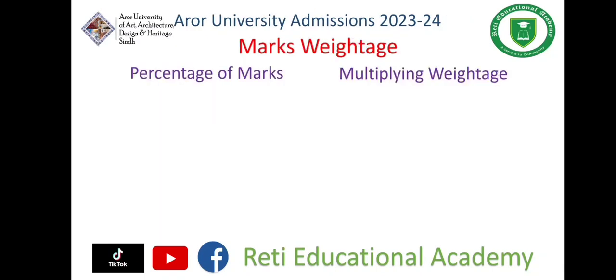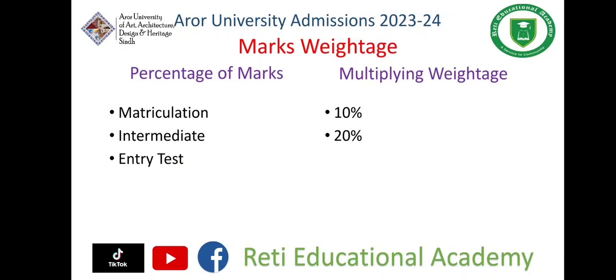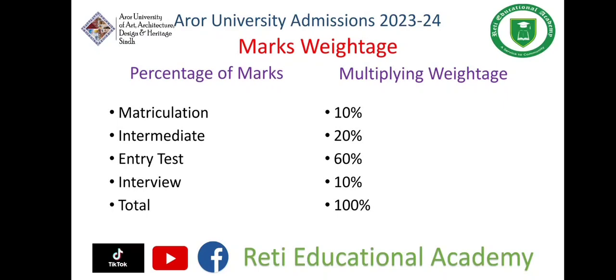Now comes the marks weightage. Matriculation marks will have a 10% count in the overall CPN. Intermediate marks will count 20%, entry test marks 60%, and interview marks 10%, totalling 100%. For example, if you get 60% in matriculation, it will be multiplied by 0.1, giving you 6 marks. If you achieved 75% in intermediate, 75 multiplied by 0.2 gives 15 marks — so you will get 15 marks as per your intermediate percentage.